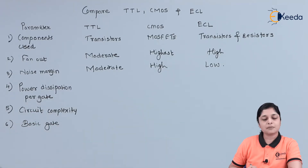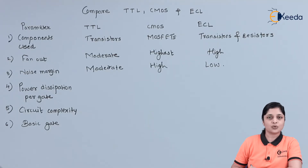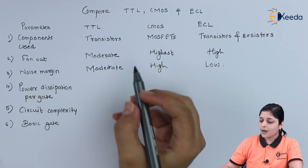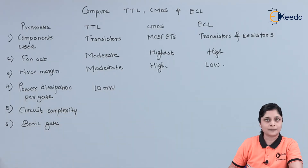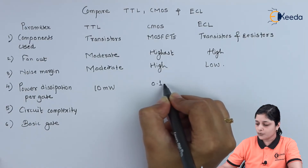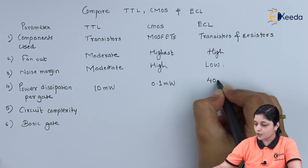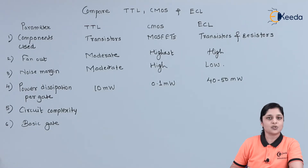Now we will discuss power dissipation per gate. Power is an important factor connected to each gate when designing ICs. For TTL it is 10 milliwatts, for CMOS it is 0.1 milliwatts, and for ECL it is 40 to 50 milliwatts — all values measured per gate.